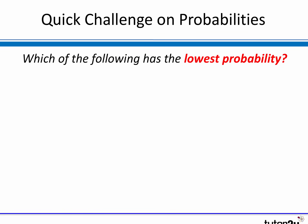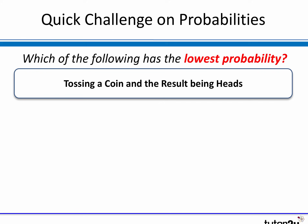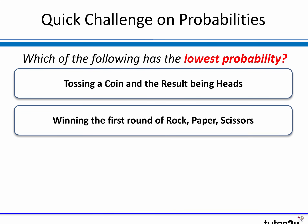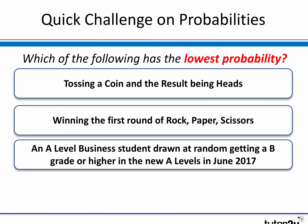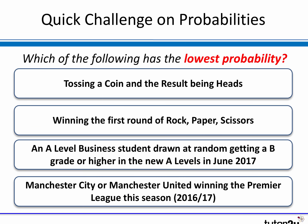To think about probabilities, here are four things on screen. Maybe pause the video and try to work out which has the lowest probability. Is it the probability of tossing a coin once and the result being heads? The probability of winning the first round of rock, paper, scissors? The probability of an A-level business student drawn at random getting a B grade or higher in June 2017? Or the probability of either Manchester City or Manchester United winning the Premier League in the 2016-17 season?